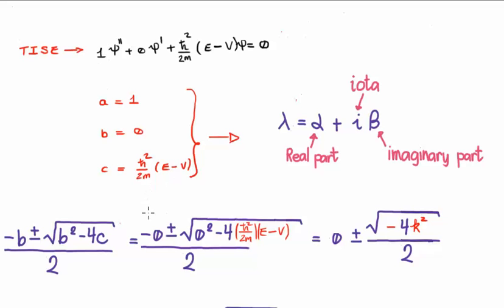I'm sure you can see straight away that because our b is equal to 0, our lambda is not going to be a real number. It's simply going to be an imaginary number because we're going to have the square root of a negative number here.